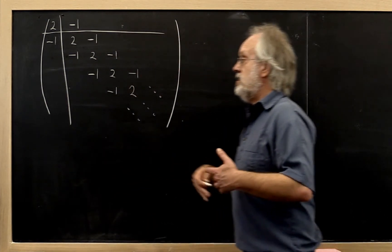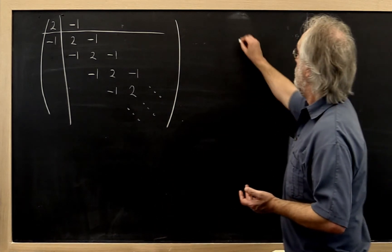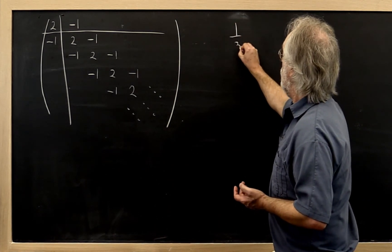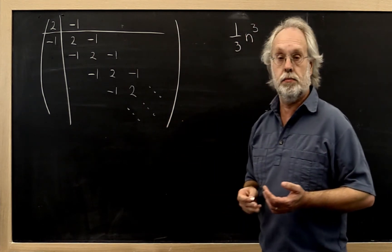And if we forgot about the fact that there are a whole bunch of zeros sitting here, then the cost of that would be 1 third n cubed, where n is the number of rows and columns here.